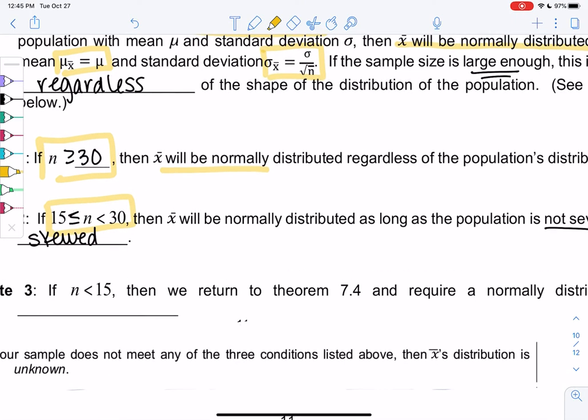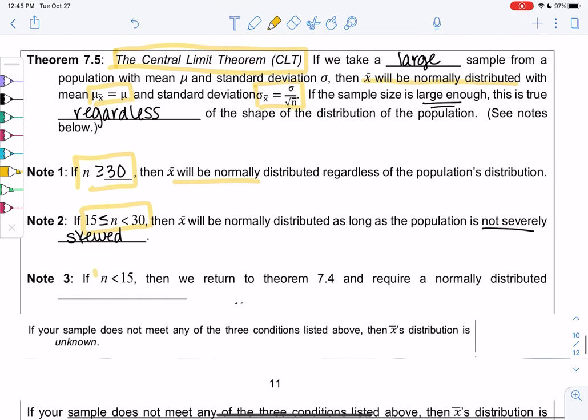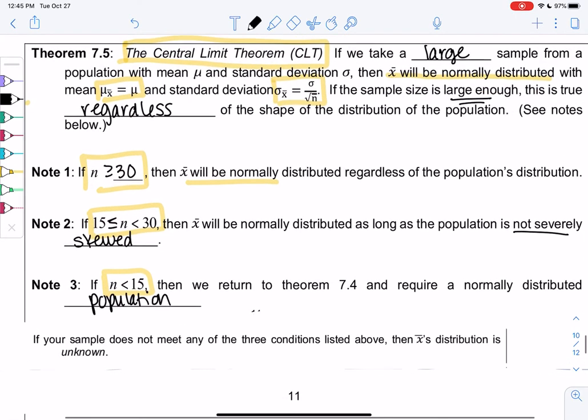Less than 15 is just too small, so we would have to know that it's a normal population. Ideally we get data of at least 30 and we don't have to worry about the rules, but really we do want at least 15 and we can just check that it's not skewed.